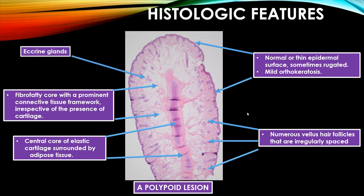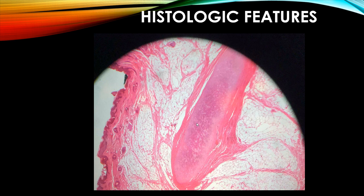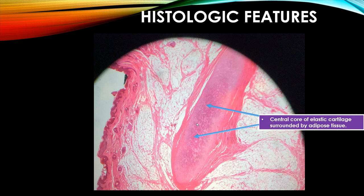It can also show eccrine glands. To summarize the histologic features: it is a polypoid lesion covered by normal or thin rugated skin. The sub-epithelium shows numerous vellus hair follicles. There is a fibrofatty core with a prominent connective tissue framework, and a central elastic cartilage surrounded by fibrous tissue and adipose tissue.